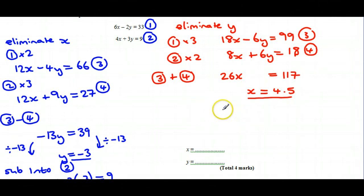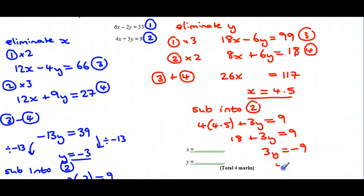Just to check that that works with y as well, if we sub that x equals 4.5 into, again, I'll choose equation 2. So we have 4 times 4.5 plus 3y is equal to 9. 4 times 4 and a half, so that will end up being 18 plus 3y equals 9. Take away 18 from both sides and then divide by 3. And in both those cases, you'll see that we end up with the same solution.